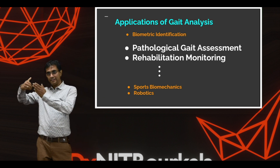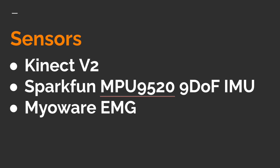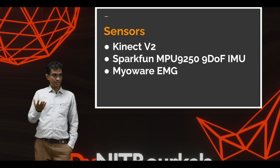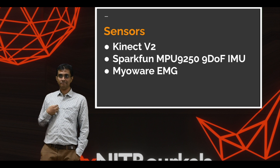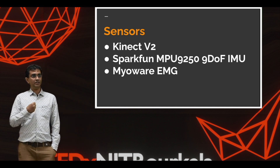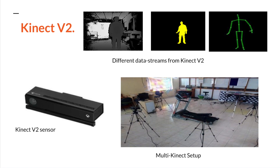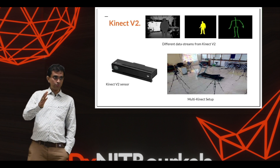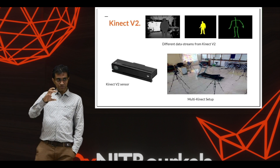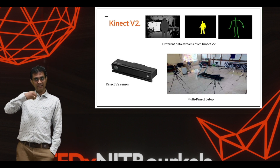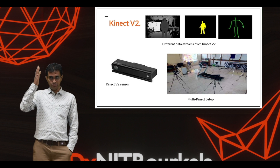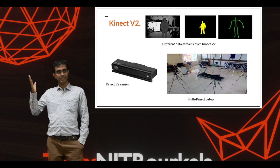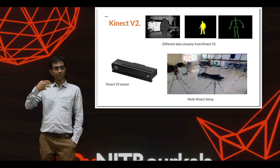To execute this task, we have used different types of sensors: Kinect sensors, Microsoft Kinect sensors, IMU sensors, and electromagnetic sensors. The Microsoft Kinect sensor was originally used for gaming purposes, but due to its motion-tracking ability, people are now using it for gait analysis. It produces different types of data streams: depth image, body index image, and skeleton image, from which you can extract different features for clinical gait analysis.